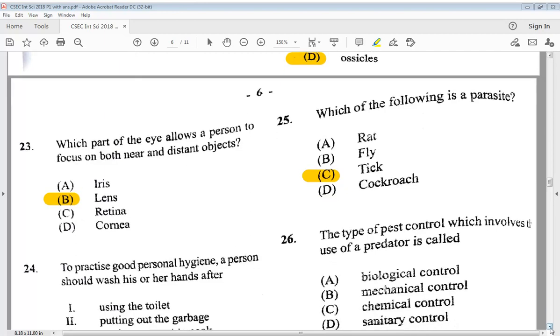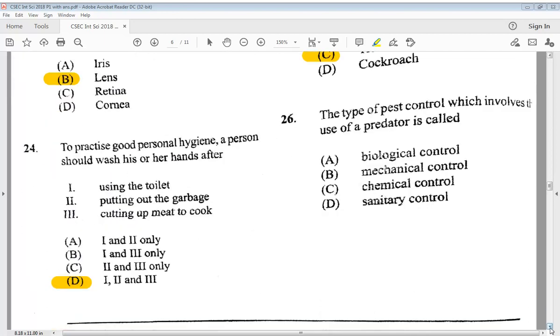Let's go to number 26. The type of pest control which involves the use of a predator is called A, biological control, B, mechanical control, C, chemical control, or D, sanitary control. So we know it is A, biological control.